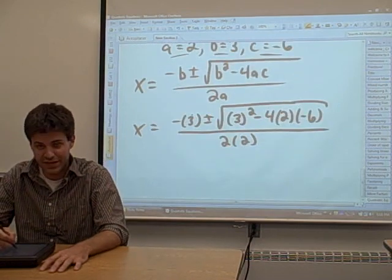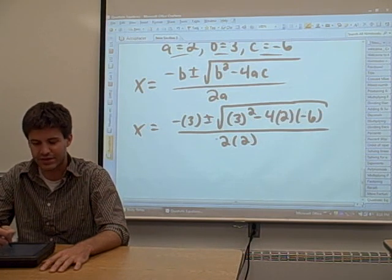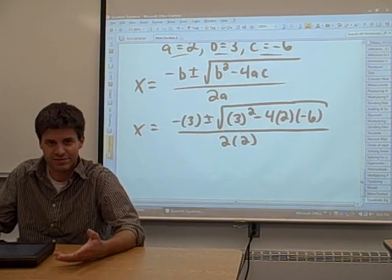We have negative b plus or minus the square root of b squared minus 4ac, all over 2a. Now we just have to simplify.